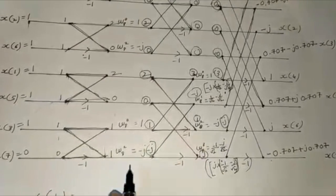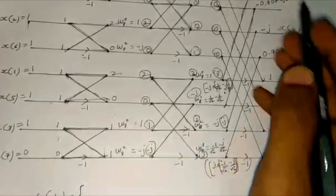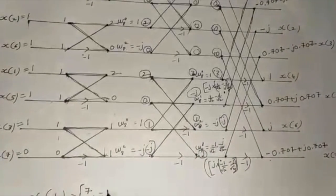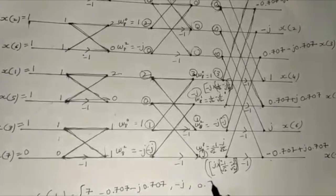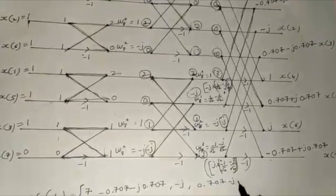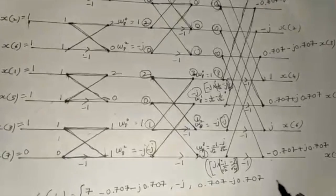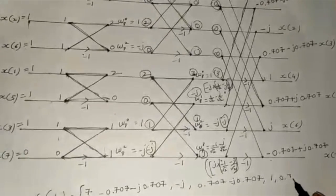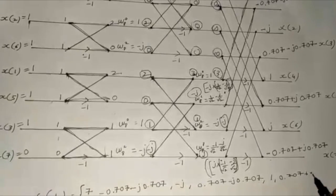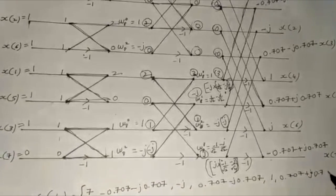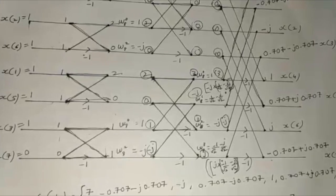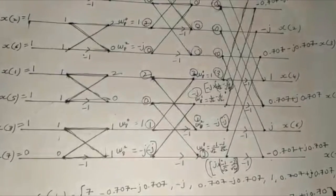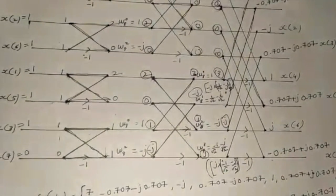From the values obtained, X(0) = 7, X(1) = 0.707 − j0.707, X(2) = −j, X(3) = −j, X(4) = 1, X(5) = 0.707 + j0.707, X(6) = j, and X(7) = −0.707 + j0.707.